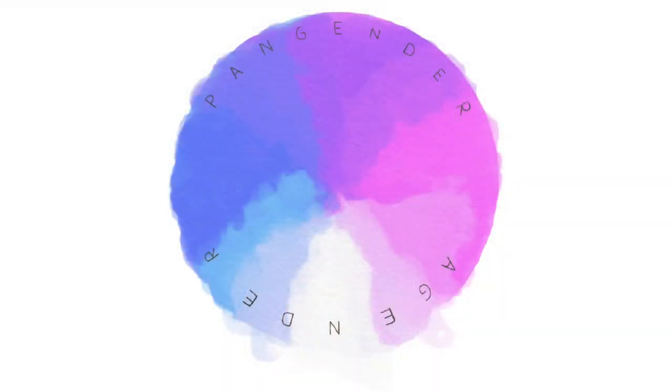Now we're going to label the bottom part of the map with the word agender, which just means a lack of gender. Where pangender on the top meant all genders, agender on the bottom means none — outside of typical male and female views. The bottom portions of this map don't fade to purple; instead, they fade to white. What's happening here is instead of the genders mixing together, they're fading away.